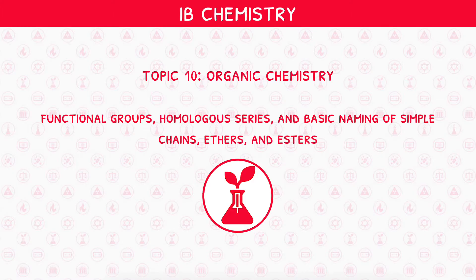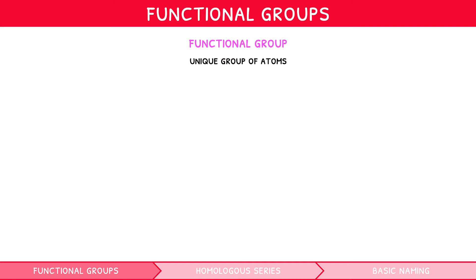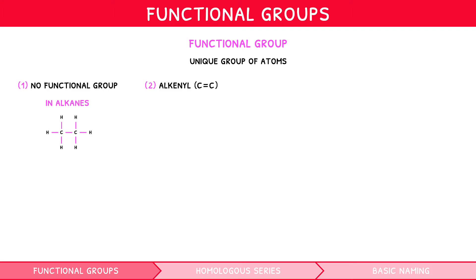All organic compounds can be divided into groups based on their presence of a unique group of atoms, known as a functional group. There are 8 key functional groups to learn for your exam, each relating to a named group. The presence of no functional group — i.e. only carbon-carbon or carbon-hydrogen single bonds — is the case for alkanes. Alkenyl, i.e. a carbon-carbon double bond, is found in alkenes. Alkynyl, i.e. a carbon-carbon triple bond, is found in alkynes.